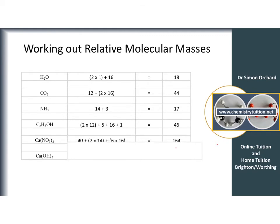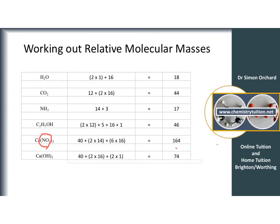Calcium nitrate: calcium is 40, nitrogen is 14, oxygen is 16. Note that NO₃ is in a bracket multiplied by 2, giving 2 nitrogens and 6 oxygens. Calcium hydroxide: calcium is 40, with 2 oxygens and 2 hydrogens, giving a grand total of 74.